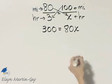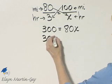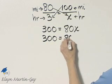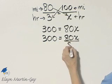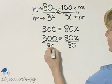Now let's solve this equation for X. I'll rewrite my equation and divide both sides by the coefficient of X which is 80.